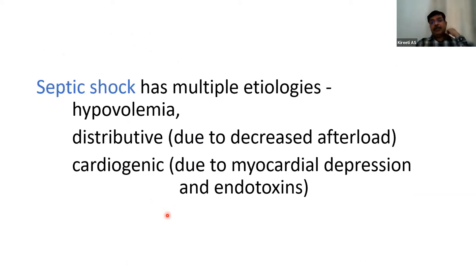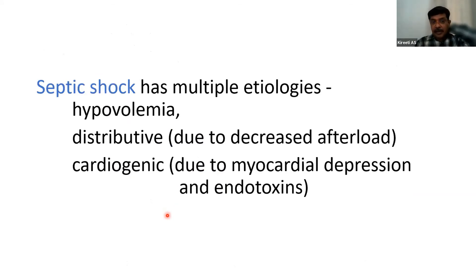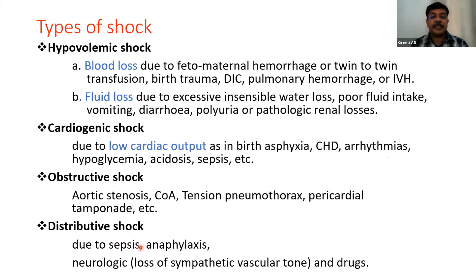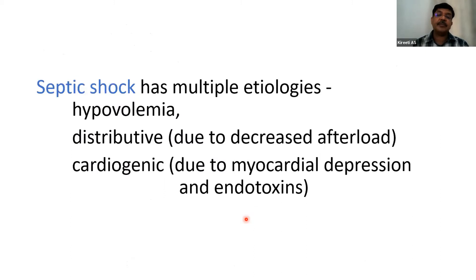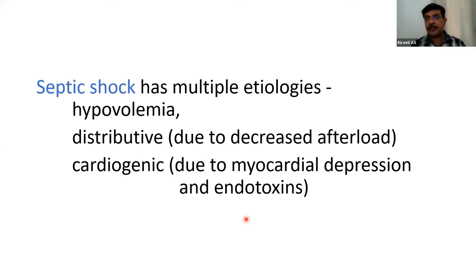Sepsis is the most common cause of shock and has multiple etiologies. It may be hypovolemic, distributive due to decreased afterload, or cardiogenic due to myocardial depression or endotoxin release. Septic shock with its multiple etiologies is the most common type of shock in preterm babies.